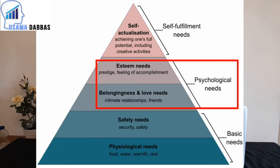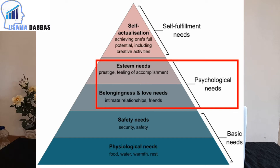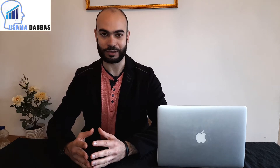The third level is belonging and community needs — having a community around you that you belong to: tribe, friends, relationships, and sexual intimacy. The next level is self-esteem needs: the need to feel appreciated, respected, and to have a deep sense of self. And the last level is self-actualization needs: the need for personal growth, realizing your potential, taking action, discovering your talents and gifts, and sharing them with the world as your life purpose.